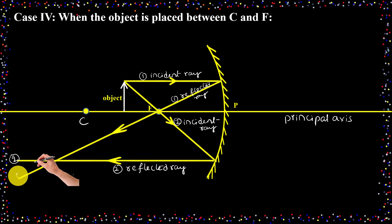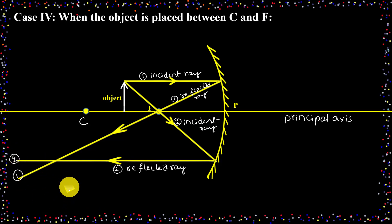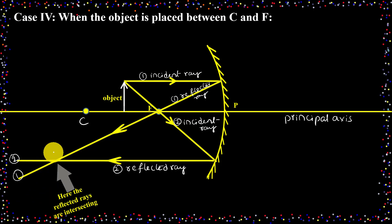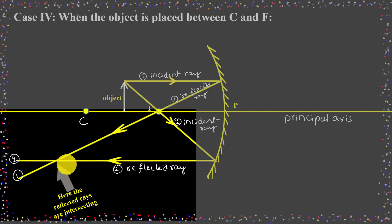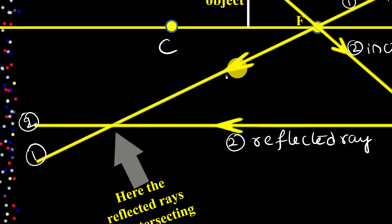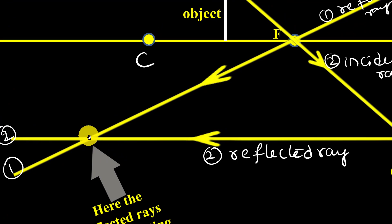Now I need to identify the position of the image. Looking at the diagram, the two reflected rays are intersecting at a point. The image will form at the point of intersection of the two reflected rays.